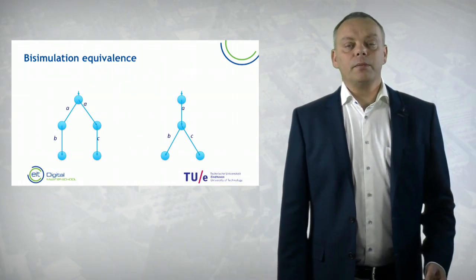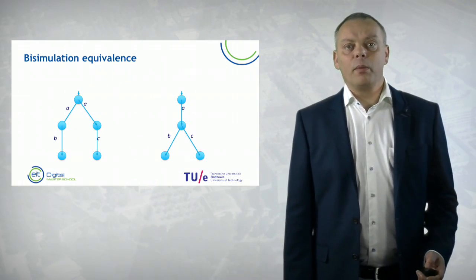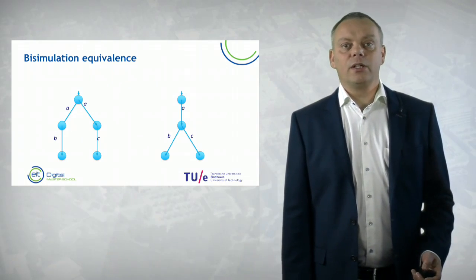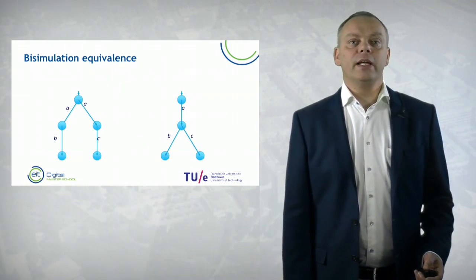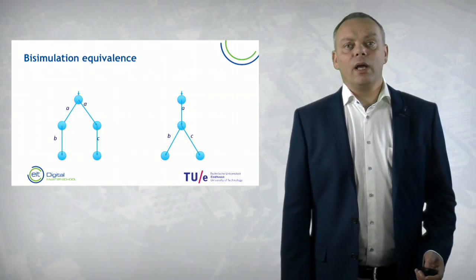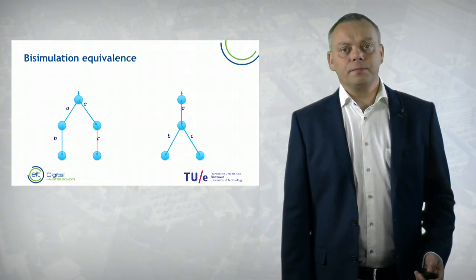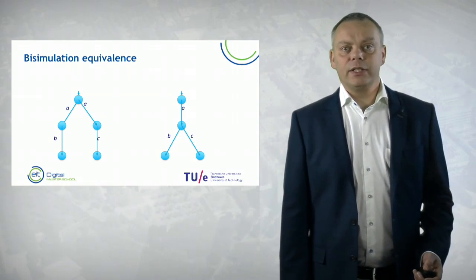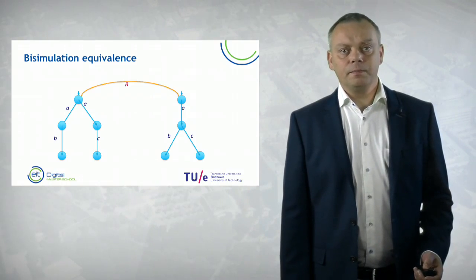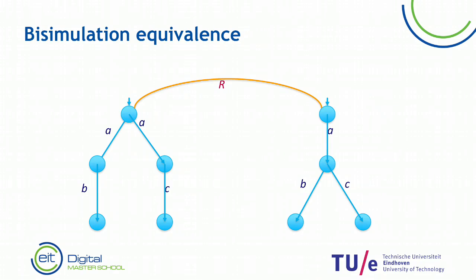Here we have another example — you probably recognize this. This is the example of the princess and the dragon, so they should not be related. We relate the initial states and attempt to show that this relation R is actually a bisimulation relation, and we will ultimately figure out that that cannot be the case.